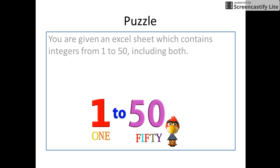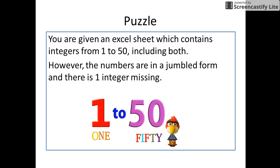In this puzzle, you are given an Excel sheet which contains integers from 1 to 50, including both. However, the numbers are in a jumbled form and there is one integer missing. How will you identify the missing integer?